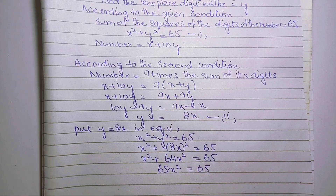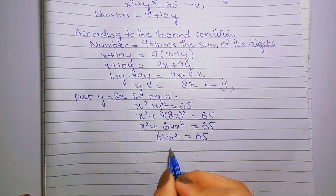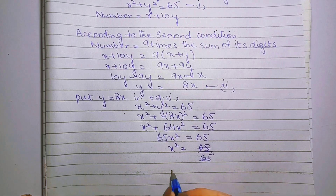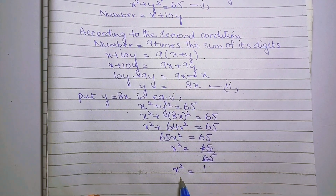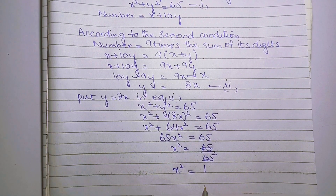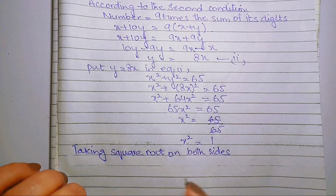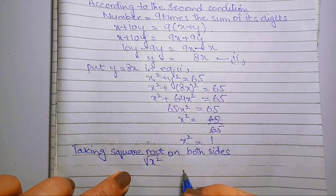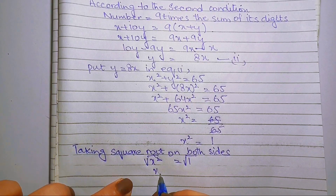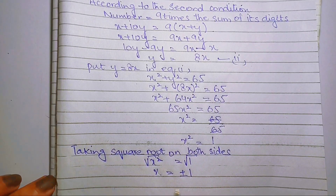65x square equals to 65। X square की value निकालने के लिए 65 को both sides divide करते हैं तो 65 cancel हो जाएगा और x square equals to 1 आगई। Square root लेने पर x equals to plus minus 1 आगया।